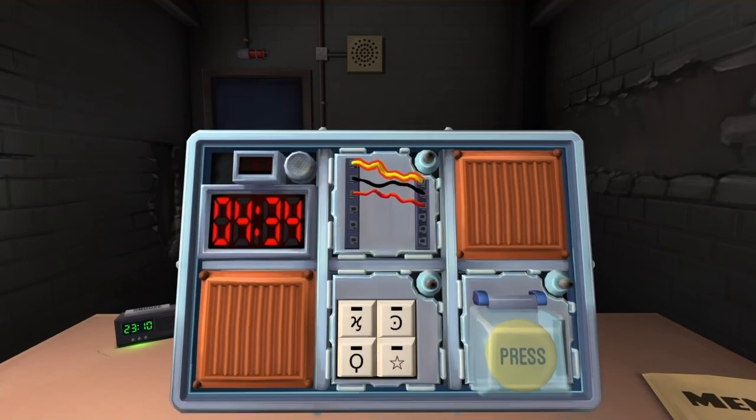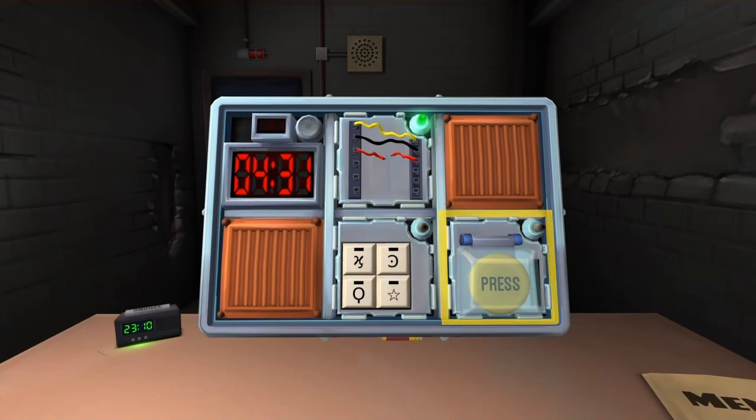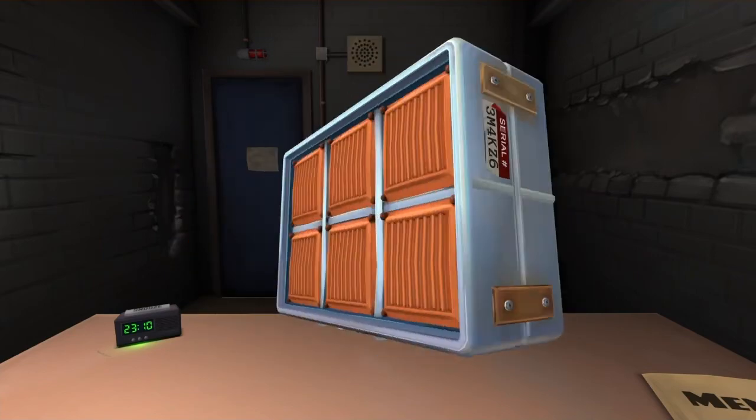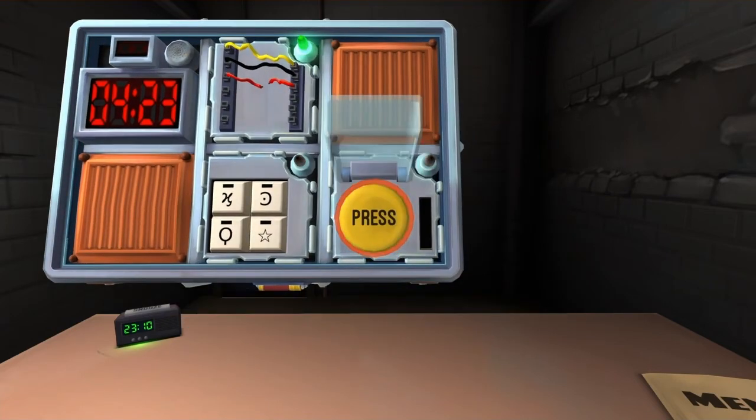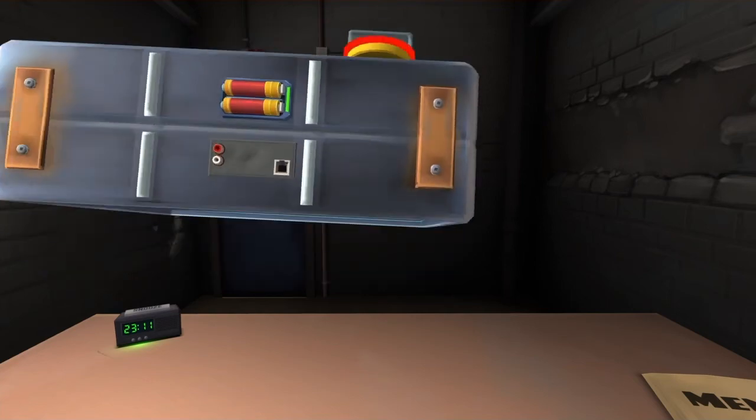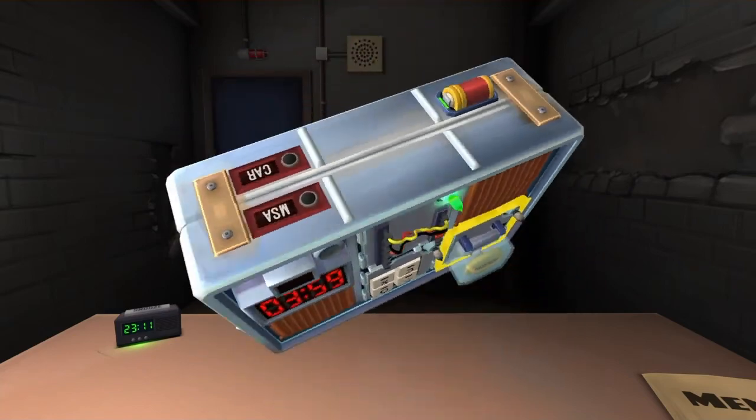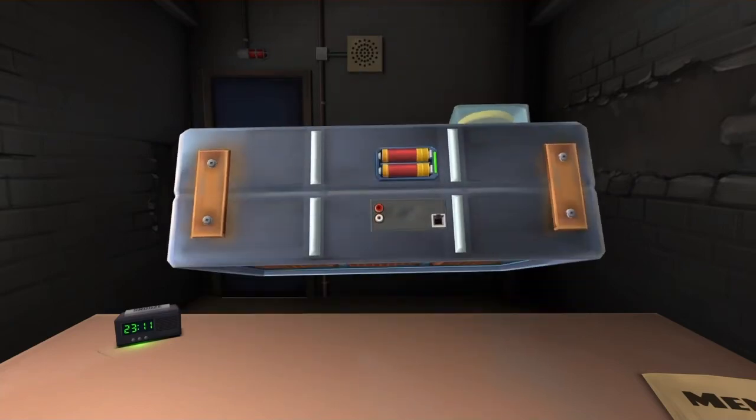Okay we have a big yellow button that says press and we have three batteries. Okay. Is there an FRK? Um, there is not.